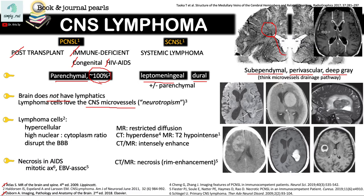This example shows subependymal spread. The next key concept is that lymphoma cells are hypercellular. If you have hypercellularity, you have restricted diffusion on MRI.